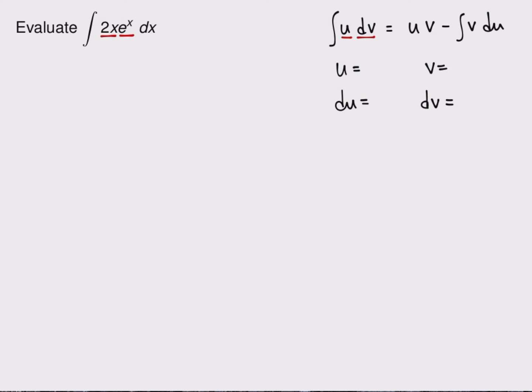So that means whatever you pick for u should have a simple derivative and it shouldn't be any worse than what you start with. And whatever you pick for dv should have a simple integral and it certainly shouldn't be any worse than what you start with.